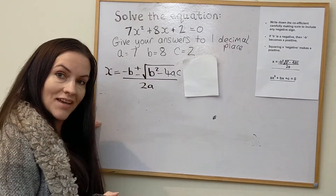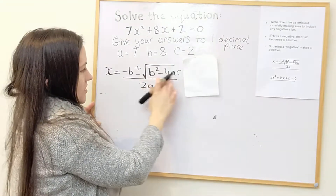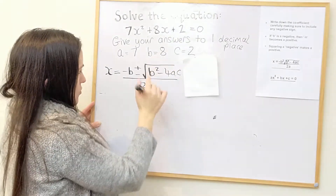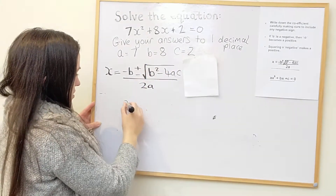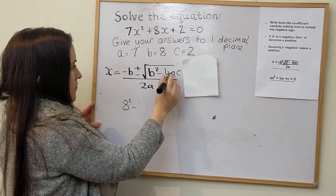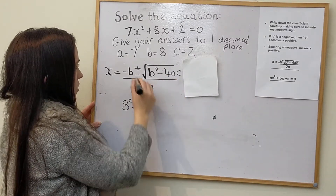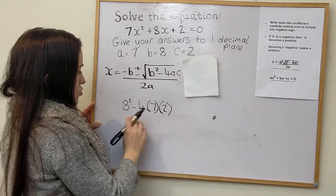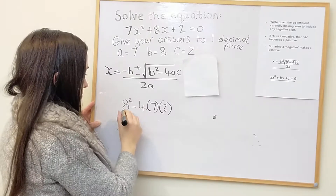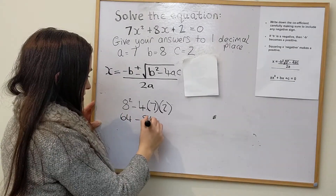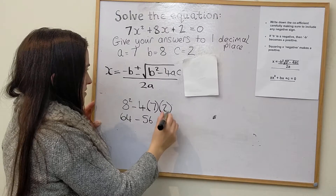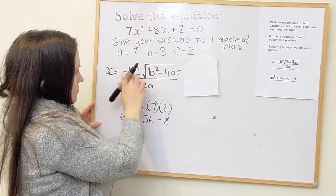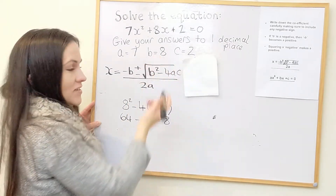I'm going to work out b squared minus 4ac first — what we'd call the discriminant. There isn't any negative value, so b squared is just 8 squared, take away 4ac, which means 4 times 7 times 2. That gives us 64 minus 56, which is just 8. So the part under the root sign becomes 8. And negative b just becomes negative 8.